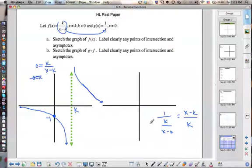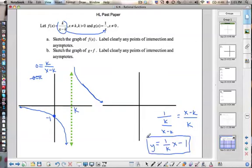And then if we simplify that even more, we should have 1 over k, x minus 1. That's a linear function now. So it changed from a rational to a linear.